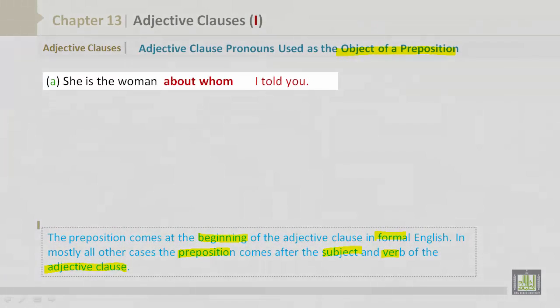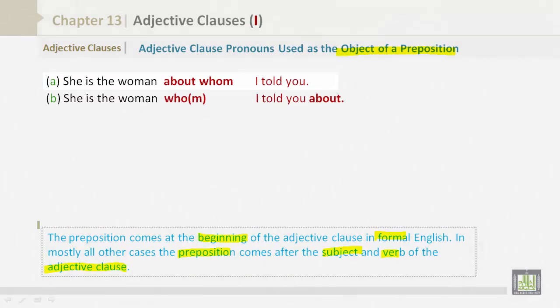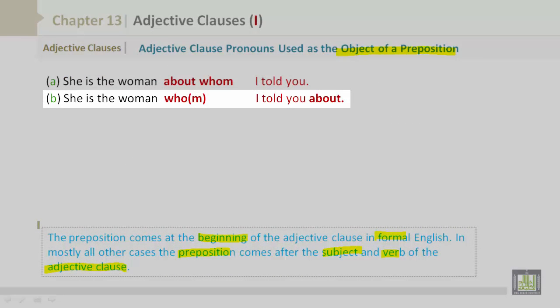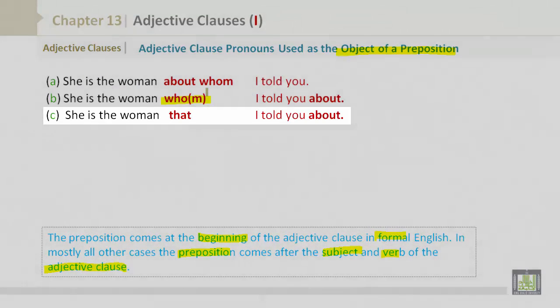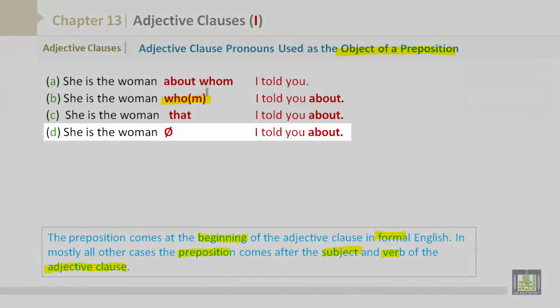For example, she is the woman about whom I told you. Or you could say, she is the woman who I told you about, or she is the woman whom I told you about. She is the woman that I told you about. She is the woman I told you about.